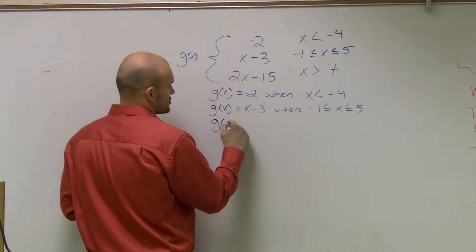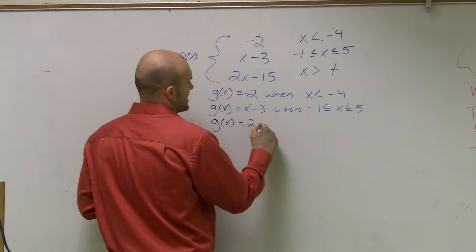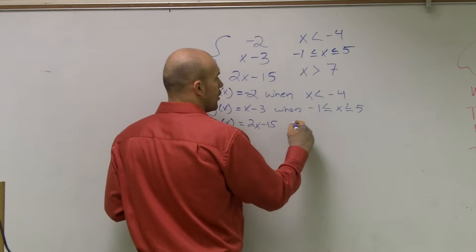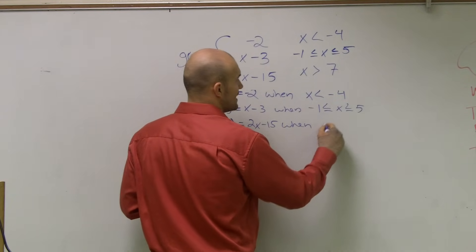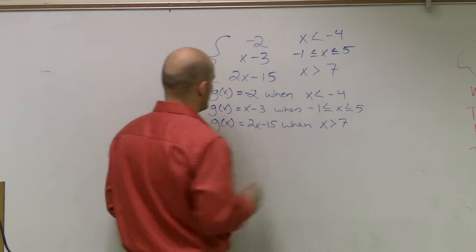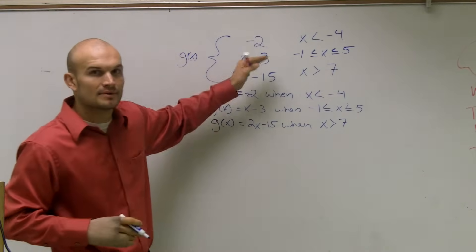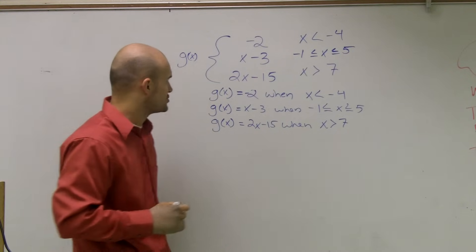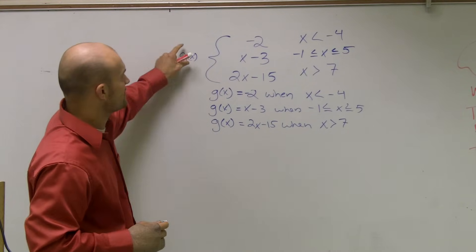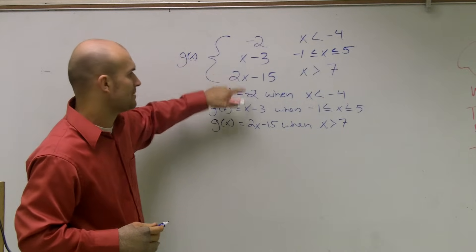And they want me to graph the function 2 of x minus 15 only when x is greater than 7. Now, these aren't g of x because actually g of x is all of them combined. But I had to use a function, so I used g of x again. Notice g of x is the function of all three of these combined.